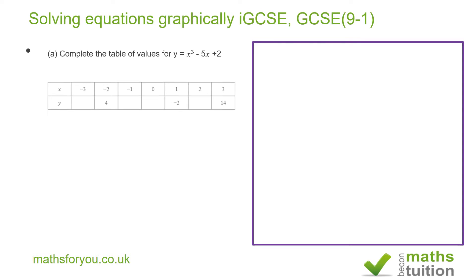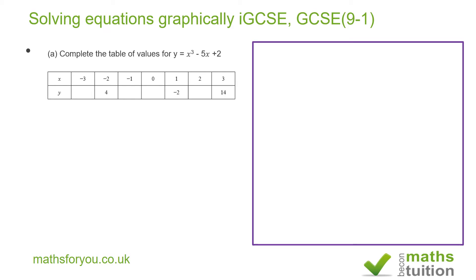This is the table. When x = -3: (-3)³ = -27, and -3 × -5 = +15. So -27 + 15 + 2 = -27 + 17 = -10. When x = -1: (-1)³ = -1, and -1 × -5 = +5. So -1 + 5 + 2 = 6. We should have 6 there.